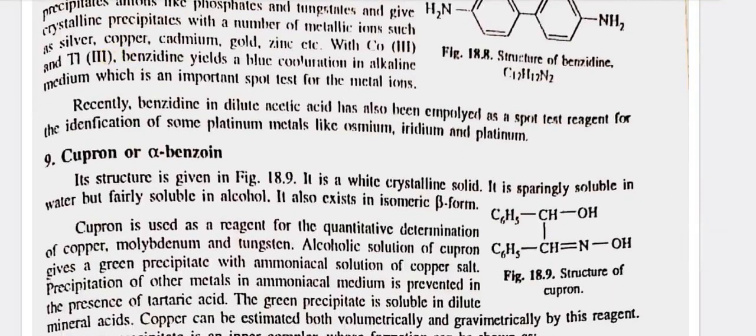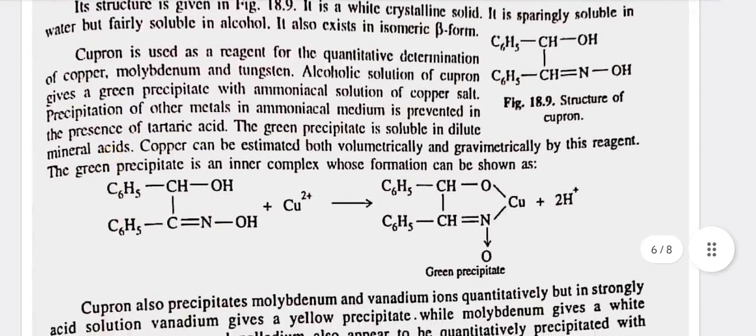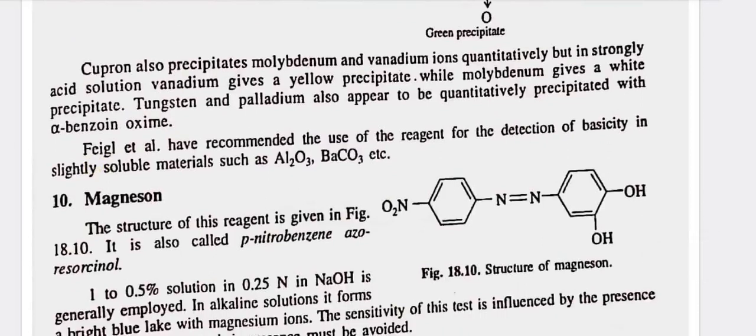Recently, benzidine in dilute acetic acid has also been employed as a spot test reagent for the identification of some platinum metals like osmium, iridium, and platinum. Ninth, cupron or alpha-benzoin oxime — its structure is given in figure 18.9. It is a white crystalline solid, sparingly soluble in water but fairly soluble in alcohol. It also exists in an isomeric beta form. Cupron is used as a reagent for the quantitative determination of copper, molybdenum, and tungsten. Alcoholic solution of cupron gives a green precipitate with ammoniacal solution of copper salt. Precipitation of other metals in ammoniacal medium is prevented in the presence of tartaric acid. The green precipitate is soluble in dilute mineral acids. Copper can be estimated both volumetrically and gravimetrically by this reagent. Cupron also precipitates molybdenum and vanadium ions quantitatively in strongly acid solution. Vanadium gives a yellow precipitate while molybdenum gives a white precipitate. Tungsten and palladium also appear to be quantitatively precipitated with alpha-benzoin oxime.